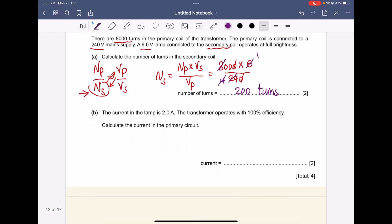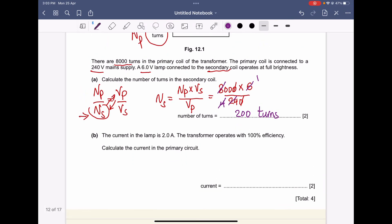This is for section A. Section B: the current in the lamp is 2 amperes. This is Is, the current in the secondary coil. The transformer operates with 100% efficiency. Calculate the current in the primary circuit.